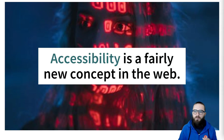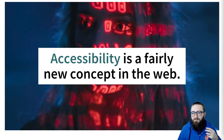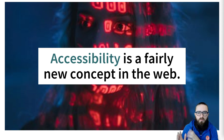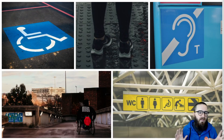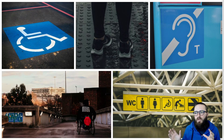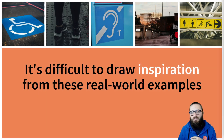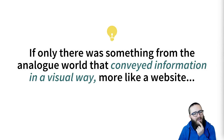Accessibility is a fairly new concept in the world of the web. The web itself is only in its early 30s, and I think it's fair to say that accessibility wasn't a priority in Web 2.0. So to catch up, it makes a lot of sense to stand on the shoulders of giants. What can we learn about accessibility from the real world that we can apply to the world of the web? The real world contains thousands of examples of accessible design, from accessible parking spaces and accessible toilets to tactile paving and hearing loops. But it can be quite difficult to find parallels to some of those issues we come across on the web — so if only there was something from the analog world that conveyed information in a visual way, more like a website does.